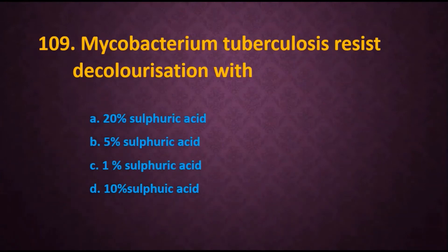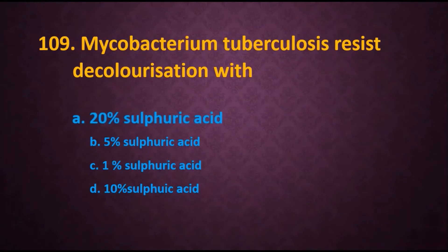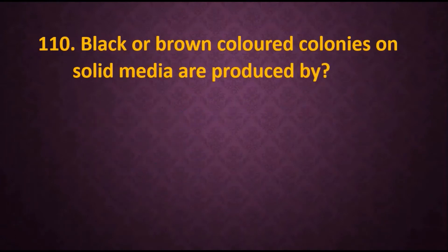Question 108: Antone test is used for the diagnosis of — [options not fully captured]. Question 109: The concentration of sulfuric acid used is — options are: A) 20% sulfuric acid, B) 5% sulfuric acid, C) 1% sulfuric acid, D) 10% sulfuric acid. The answer is 20% sulfuric acid.